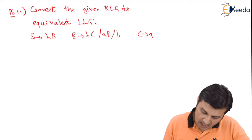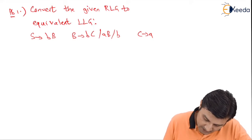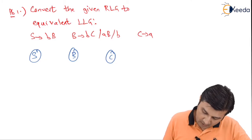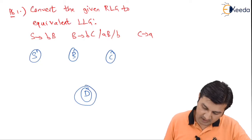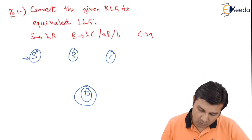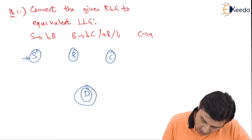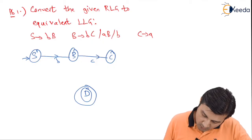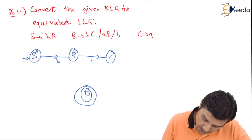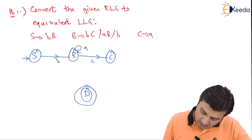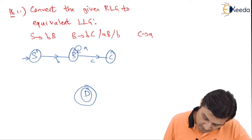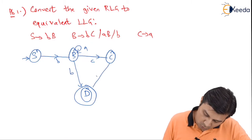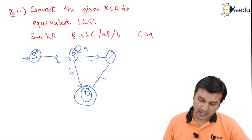So let us do that. We have 4 states: S, B, C, and D. D is the final state and S is the start state. Going ahead: S on 'b' goes to B; B on 'b' goes to C; B on 'a' goes to B; B on 'b' goes to the final state D; and C on 'a' also goes to the final state D. That completes the finite automata.